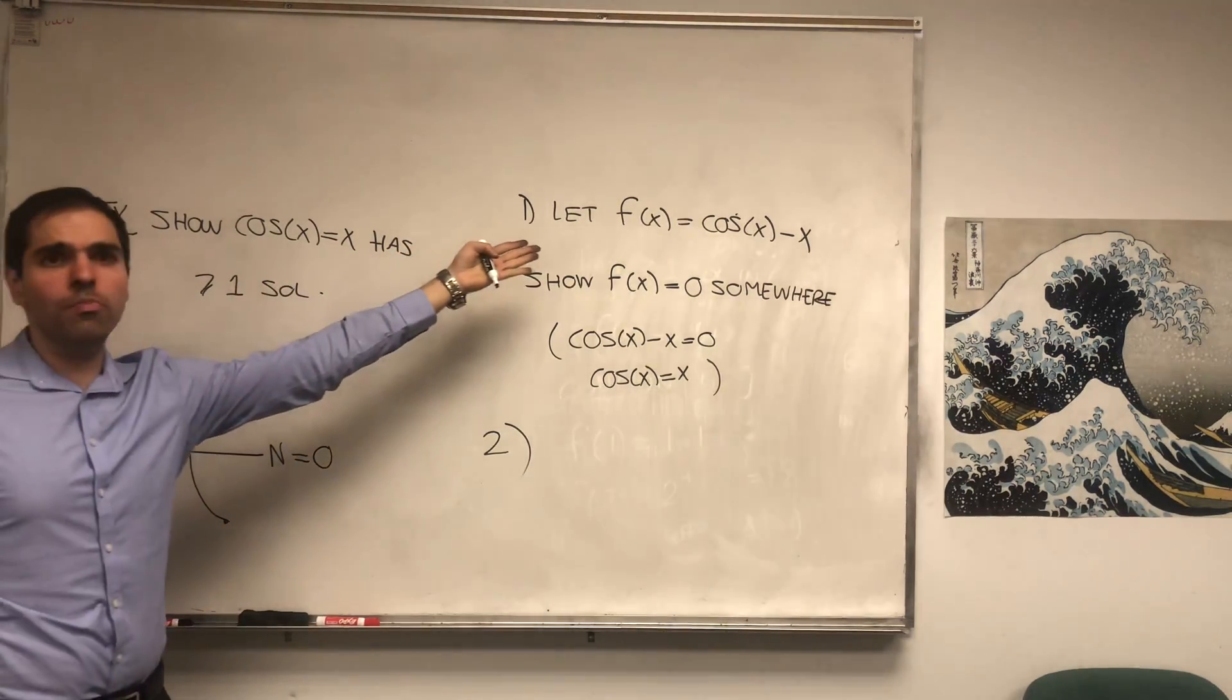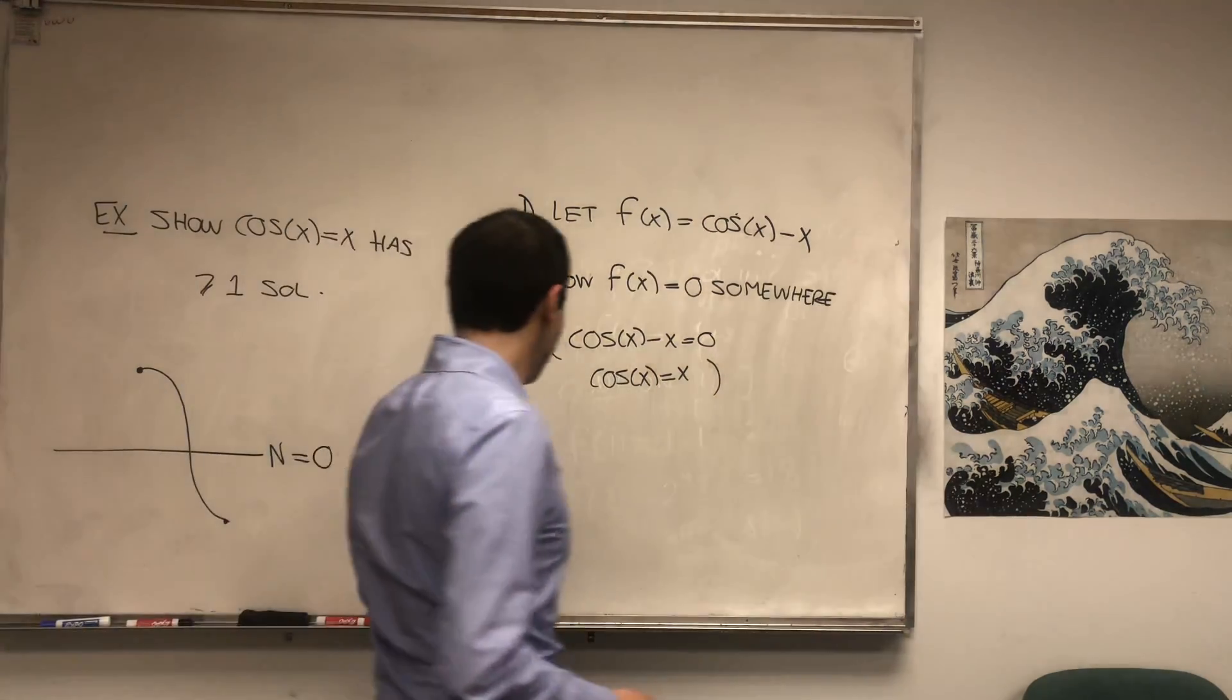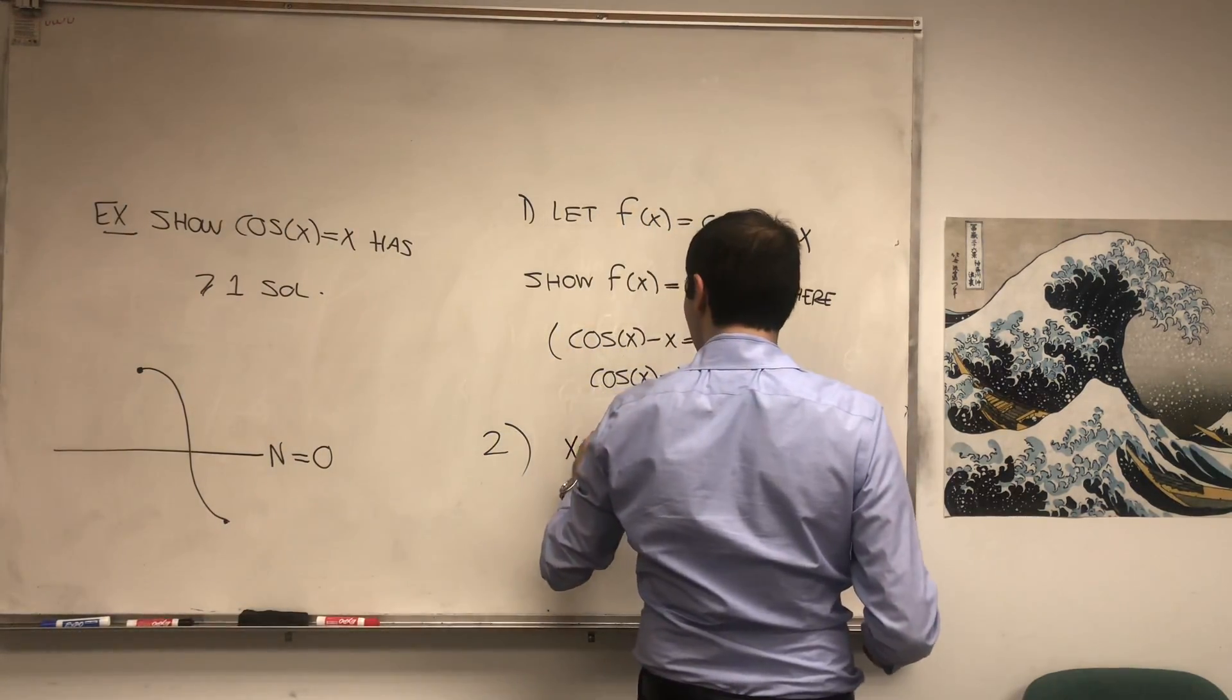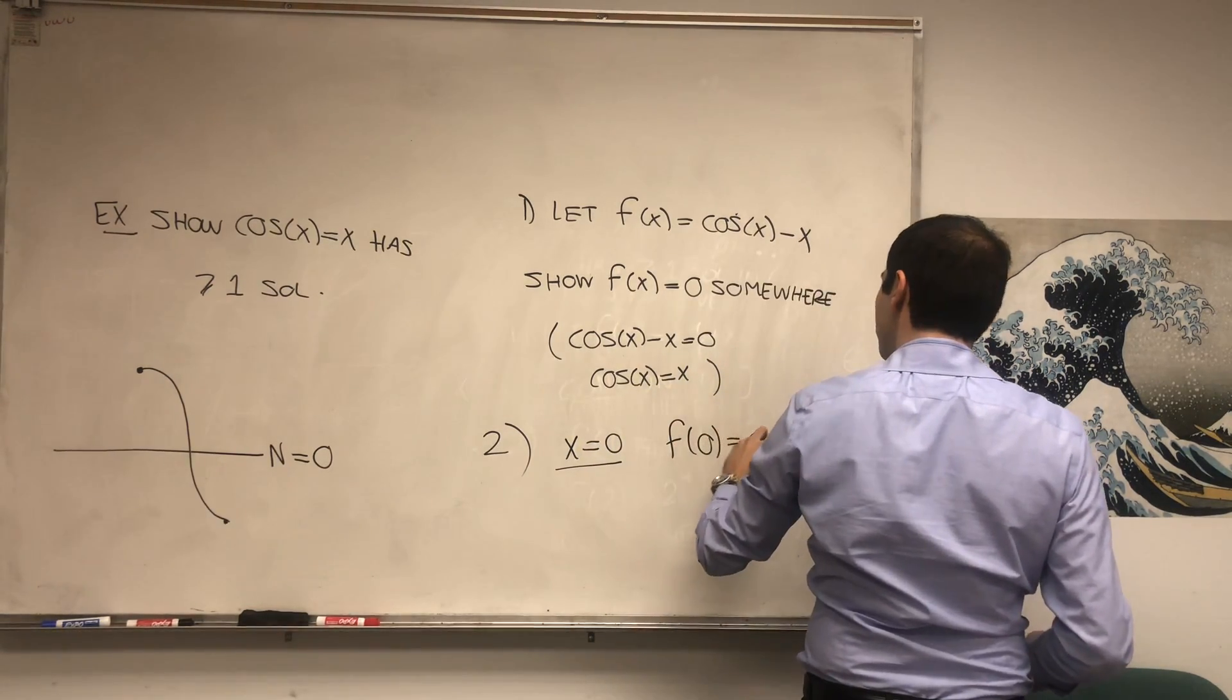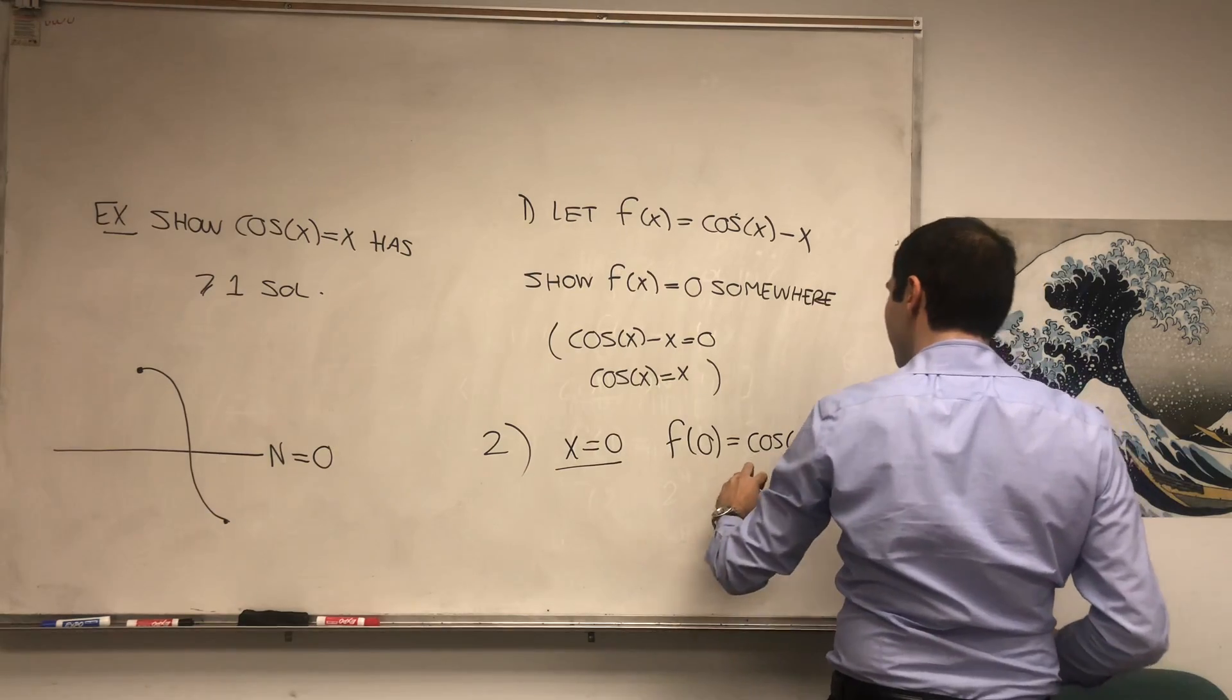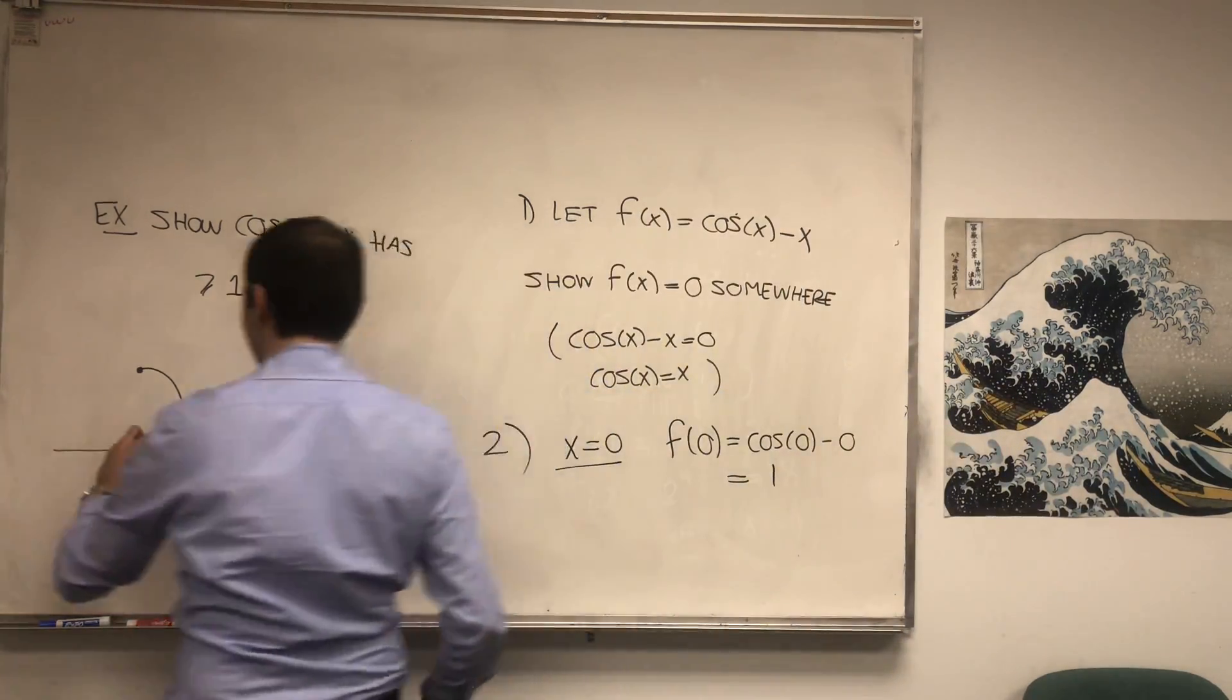Well, just try to pick some points where the function is easy to evaluate. So for instance, pick x equals zero, then f(0) is cos(0) - 0, and that's 1. So f(0) equals 1.